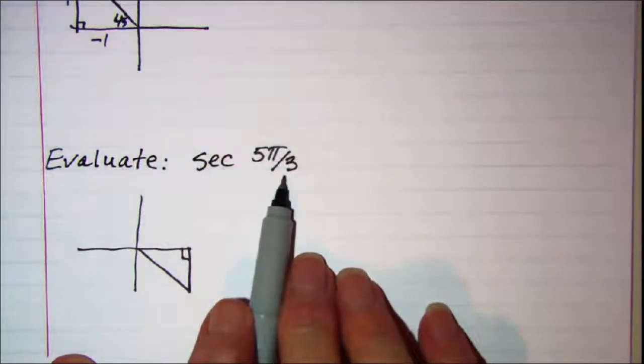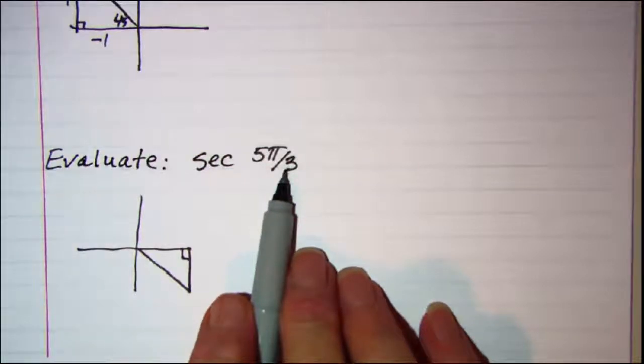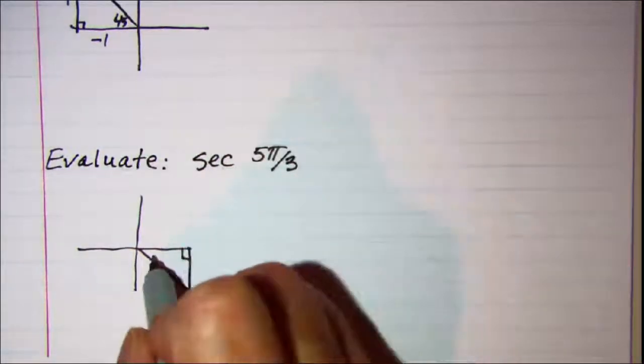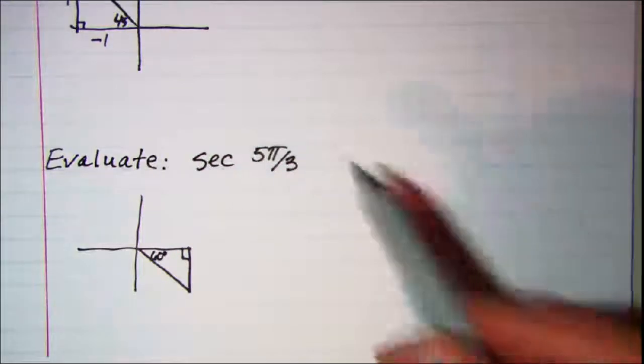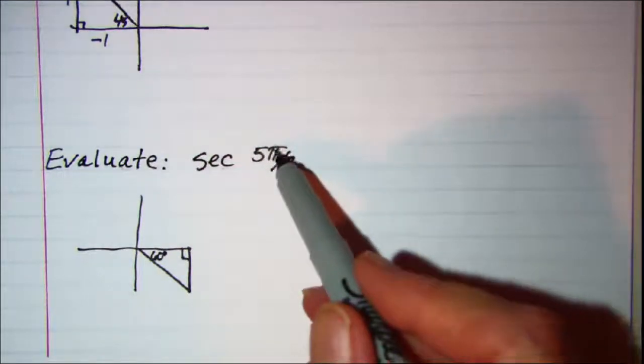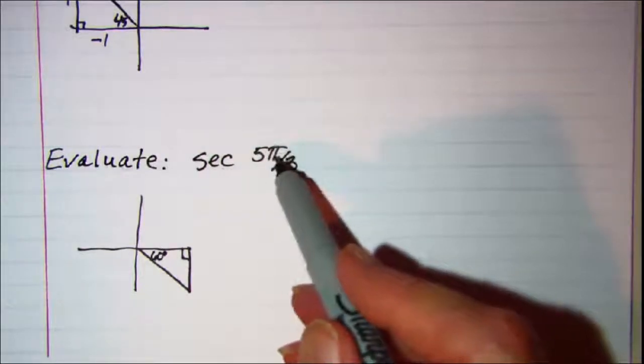Pi over 3 is the same as a 60 degree reference angle. So I have a 60 degree reference angle there which is pi over 3, 1 pi over 3. And I can put my numbers in.